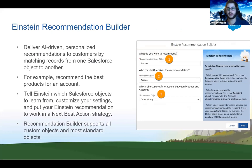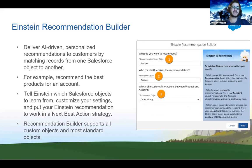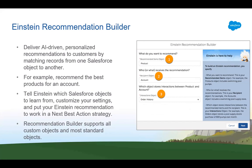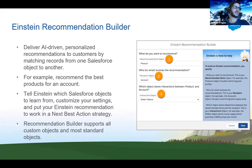A new and pretty big one is the Einstein Recommendation Builder. This brings a lot of AI-driven personalized recommendations to customers by matching records from one Salesforce object to another. If you have this turned on, it gives you great insights into your customers and what recommendations you should make while talking to them.